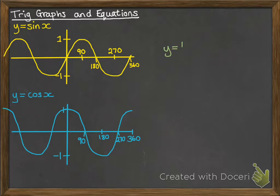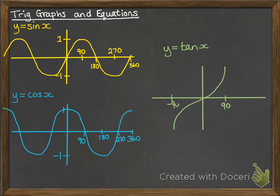Okay, now the tan graph looks like this, a little bit different. It's got asymptotes at 90 and minus 90, and it repeats every 180 degrees. So the sine and cos graphs repeat every 360, but the tan graph repeats every 180. And that goes on forever in both directions as well.